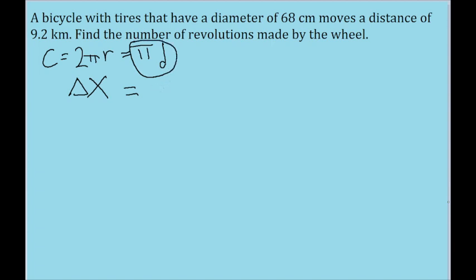It's a multiple of that circumference. So specifically, the distance that the wheel travels is equal to n, the number of revolutions, times pi d, the circumference.